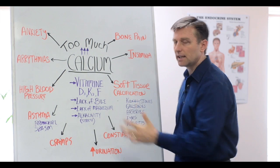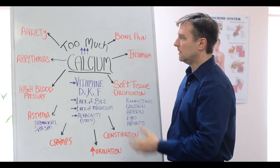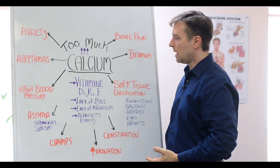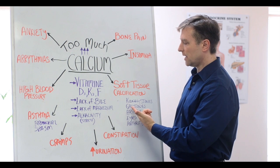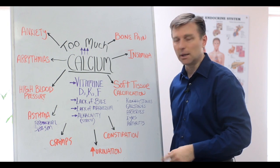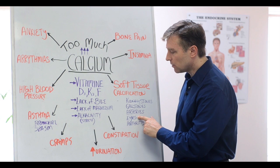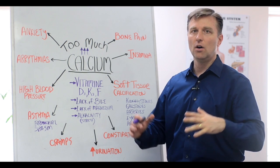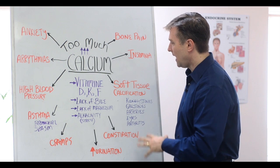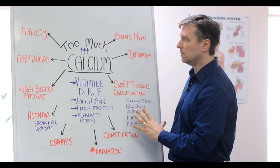Soft tissue calcification. This calcium kind of starts plugging up all the soft tissues, like of the kidney as a kidney stone, the gallbladder as gallstones, arteries as plaquing, the eyes as cataracts, arthritis, bursitis, tendonitis, all the itises. And that's just because the calcium is not able to be mobilized.